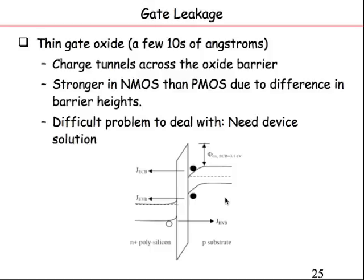The gate oxide tunneling leakage has an exponential dependence on oxide thickness. This is important for modern processes at 65 nm and below, but not for older processes. There is also a model for this tunneling current. The real solution to gate leakage is through device engineering — using high-K materials — whereas GIDL and DIBL can sometimes be mitigated through circuit-level techniques like ensuring correct placement of node potentials.